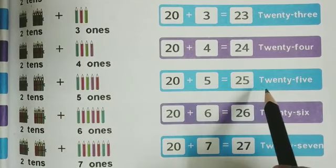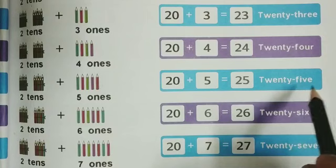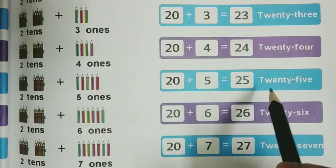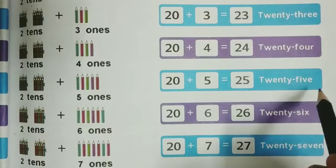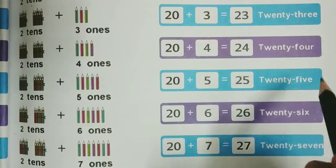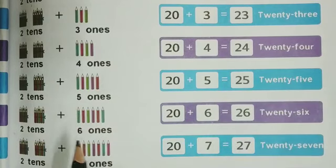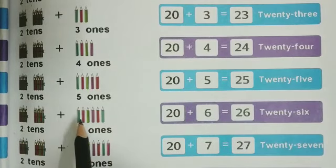The spelling of 25 is T-W-E-N-T-Y (20) F-I-V-E (5): twenty-five. We will move further.